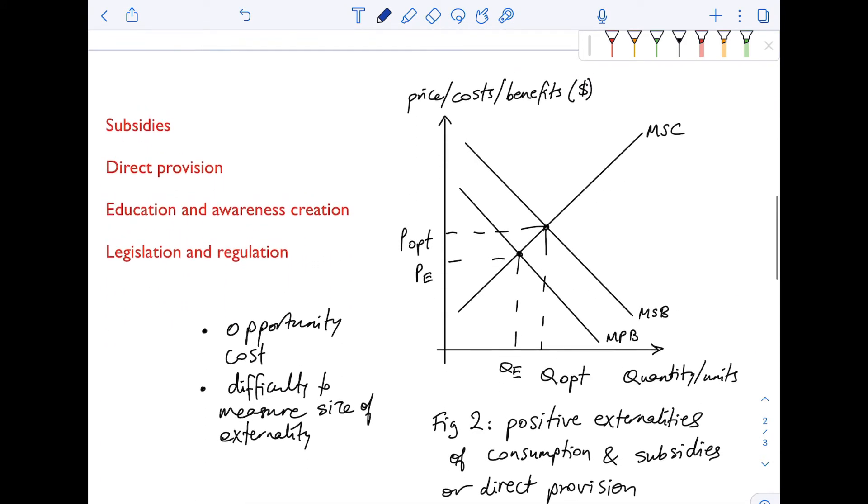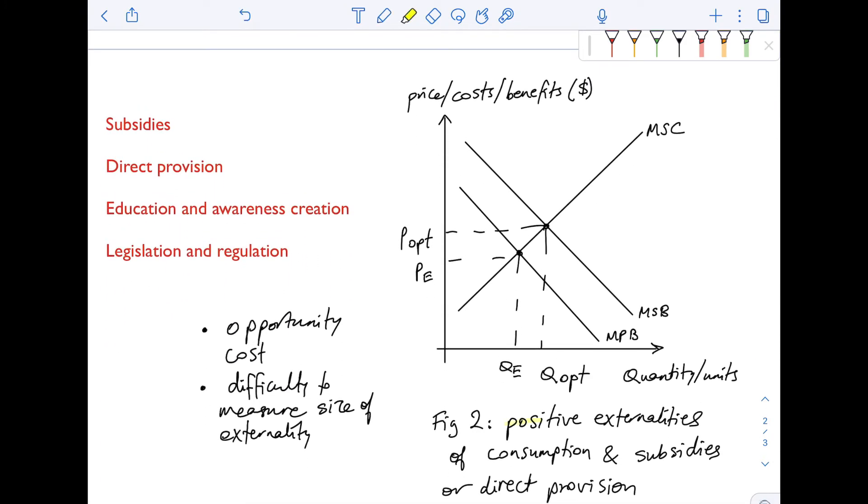All right, let's scroll below and talk about positive externalities of consumption. Okay, so the initial market failure looks like this. There's a problem of underconsumption.